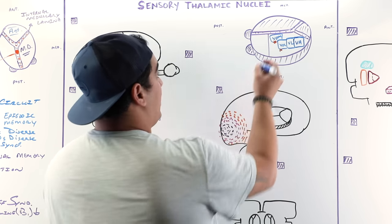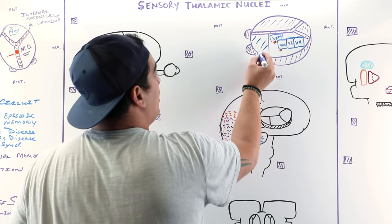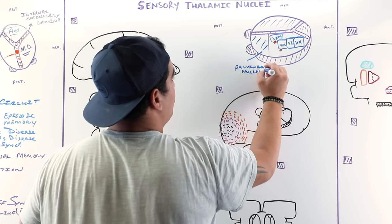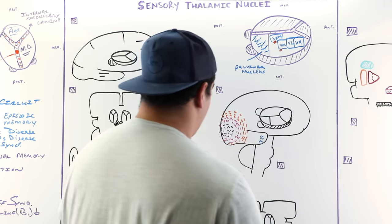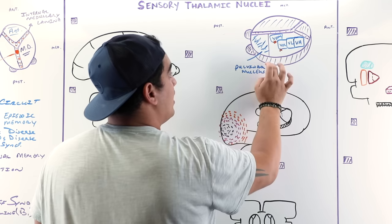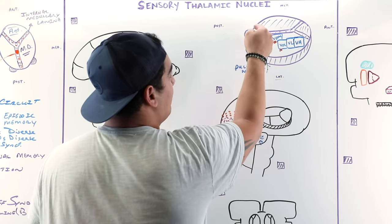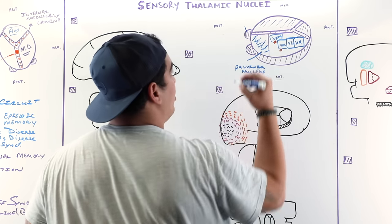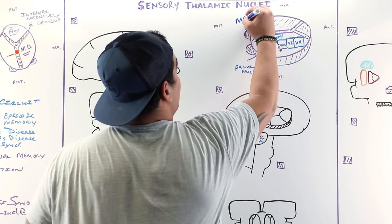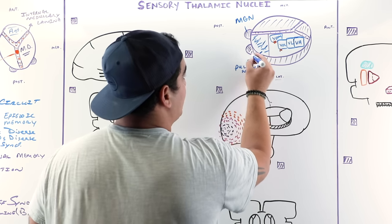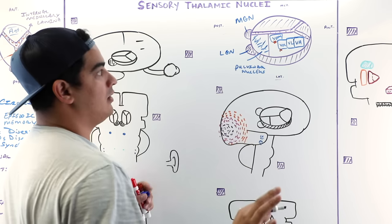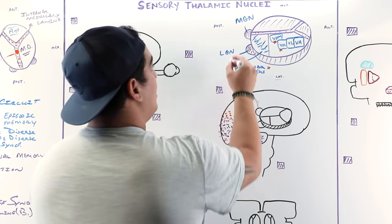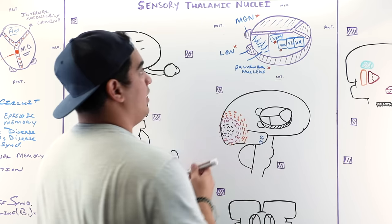In the dorsal aspect of the lateral nuclear group is the pulvinar nucleus, which covers the entire dorsal posterior area. There are also two other nuclei coming off the back of the thalamus: on the medial side is the medial geniculate nucleus, and on the lateral side is the lateral geniculate nucleus. The pulvinar nucleus, lateral geniculate nucleus, and medial geniculate nucleus are all sensory nuclei of the thalamus — giving us five sensory nuclei to discuss in total.